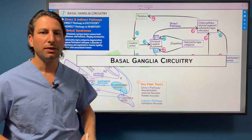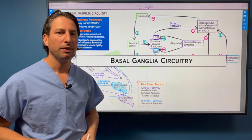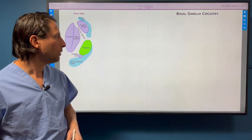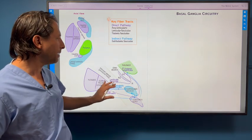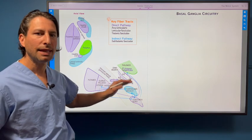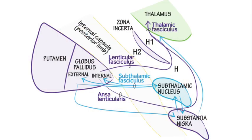Basal ganglia circuitry: the direct and indirect pathways. These are really important to know cold. So we've set up our anatomy here. These key fiber tracts are probably a step beyond what a lot of people need to know, but they do help make sense of what we're going to learn, which is the direct and indirect pathways.